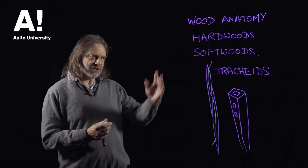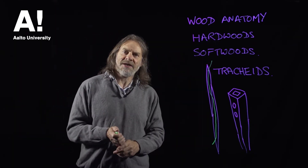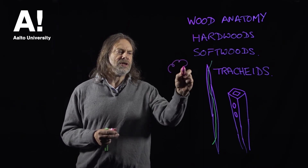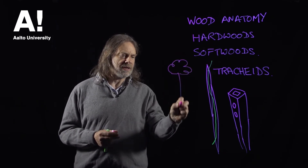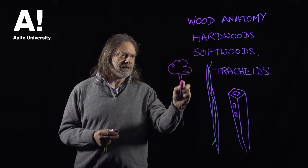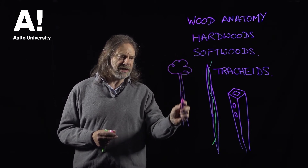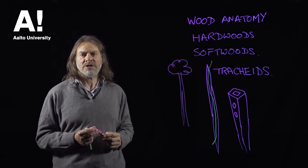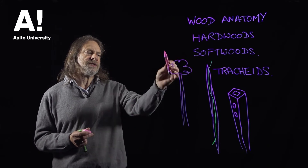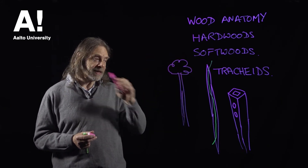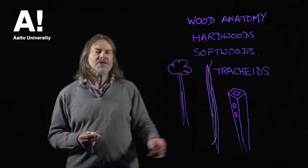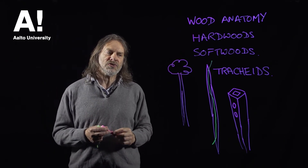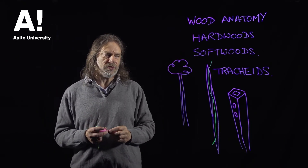The tracheids run up and down the axis of the tree. This is what a tree looks like — there's the trunk. The tracheids run up and down in this direction: the longitudinal axis of the tree, the vertical axis, the growing direction. Apart from conducting water, they're also there to act as structural support for the tree.